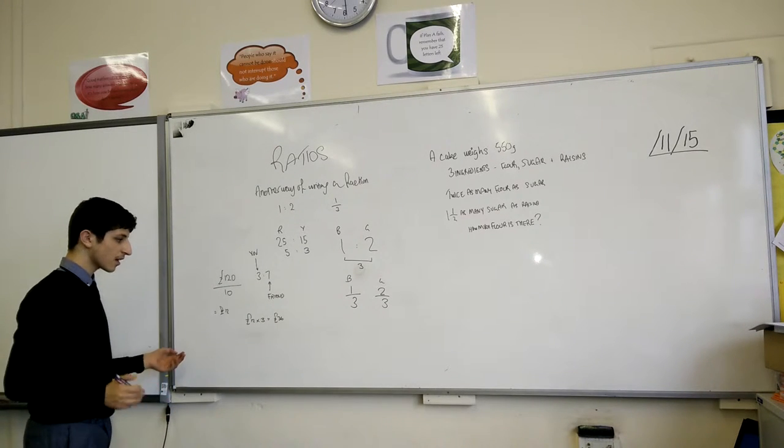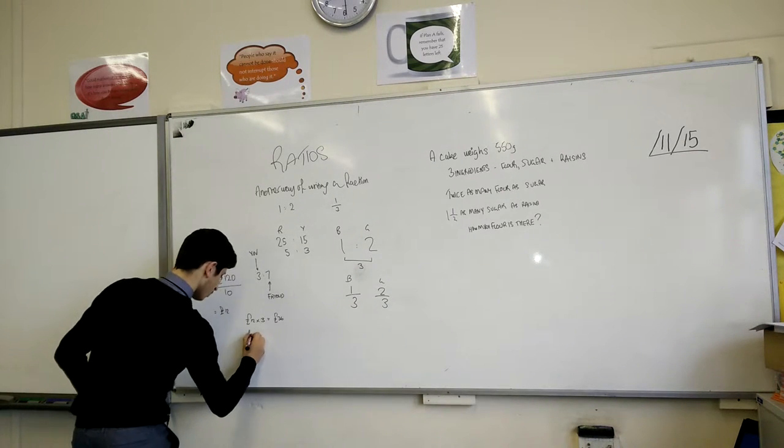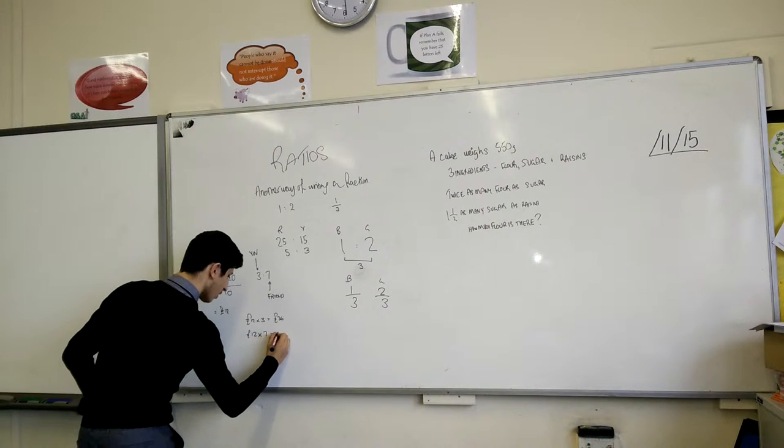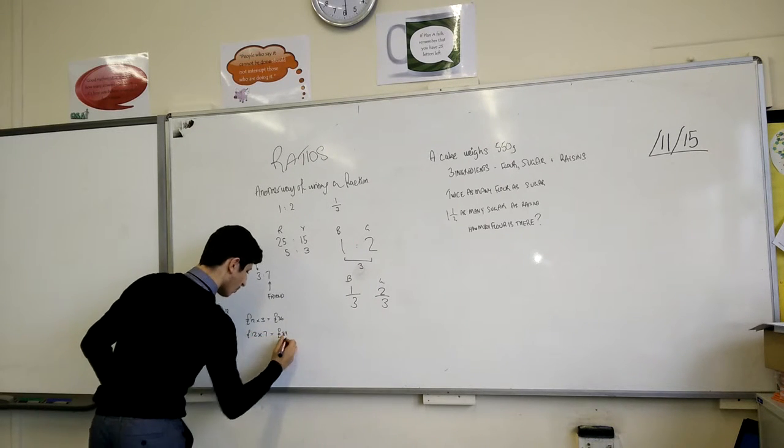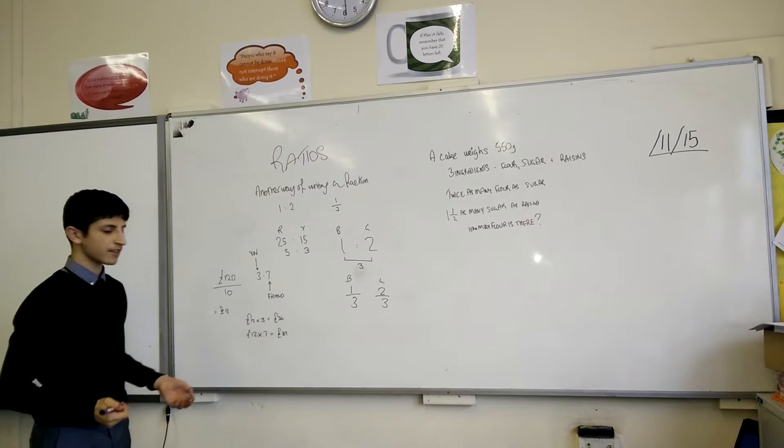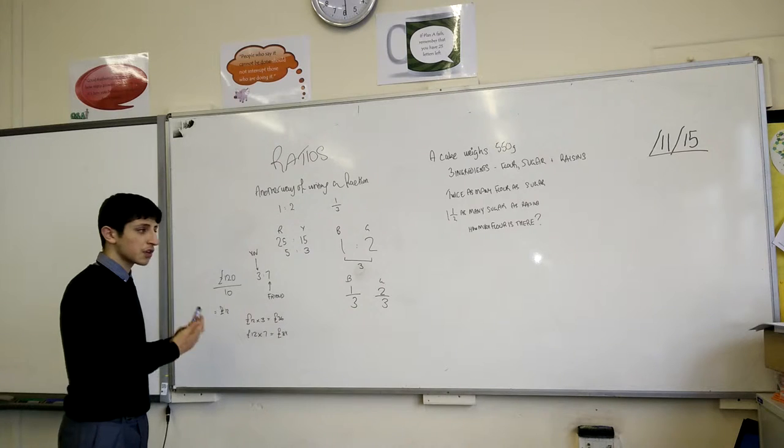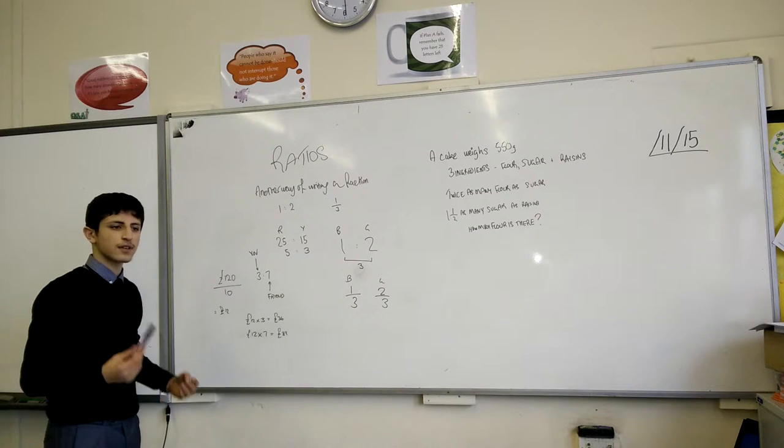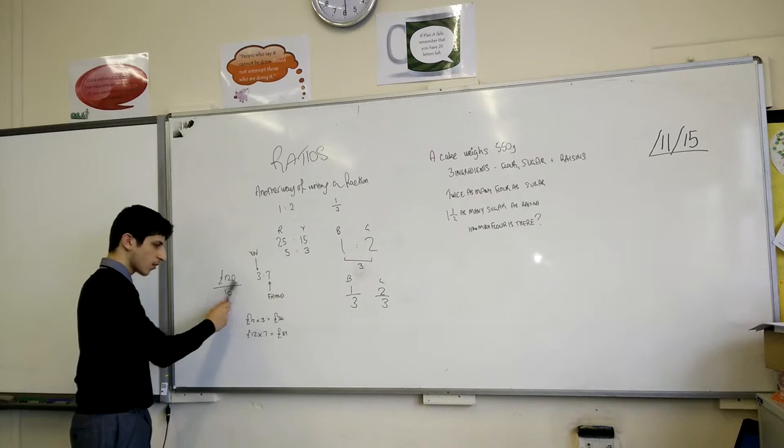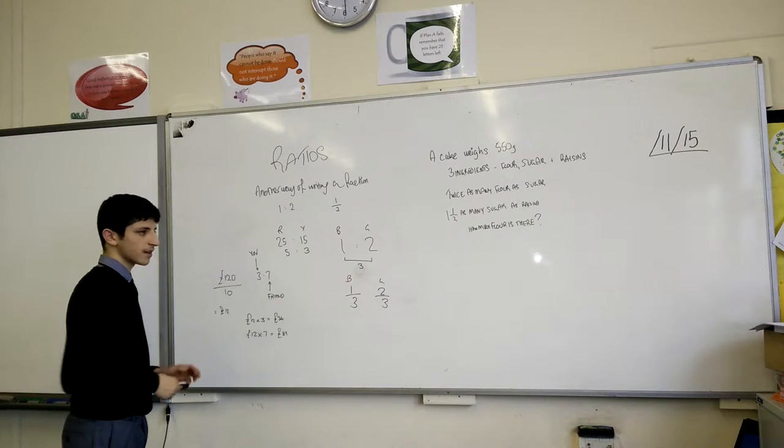Just to check, twelve times seven, which is what your friend is getting, is eighty-four pounds. Eighty-four plus thirty-six equals one hundred and twenty pounds, which is the original sum. That's how you can use ratio to check what your answer was and to check that it was right.